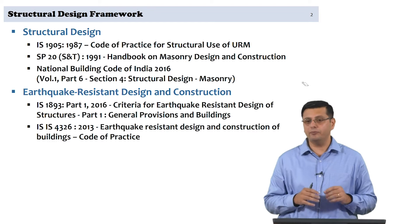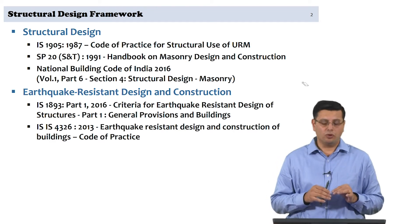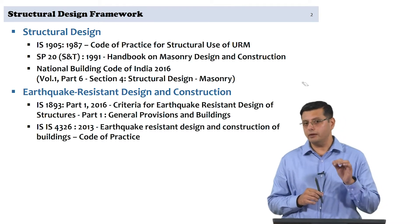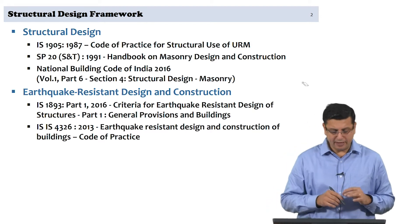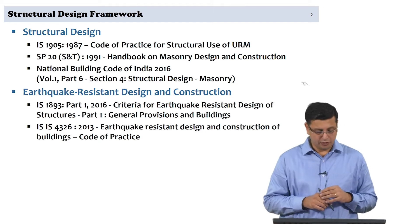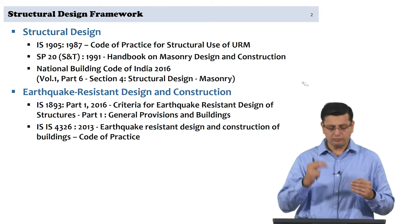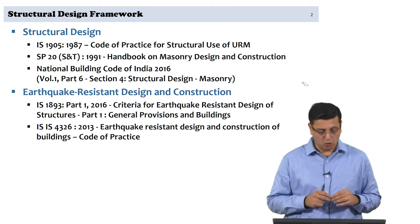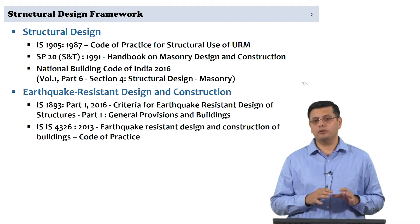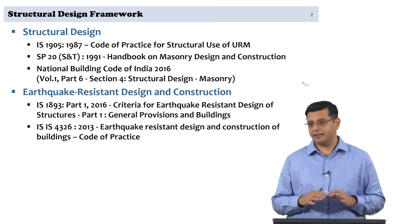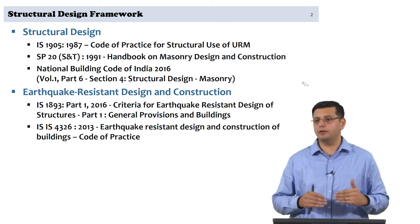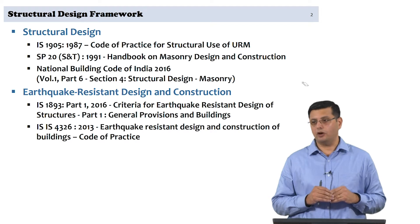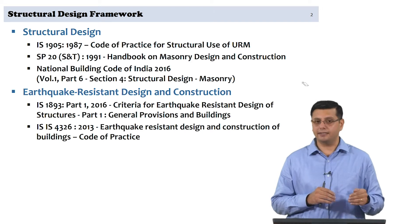Let us begin this module, but we really need to understand the structural design framework that exists for masonry structures. I repeat what I had started off with in module 1 on the different codes available for masonry structural design. I am making reference to particularly 4 codes. One other document referred to here is a handbook — an explanatory handbook for the design code itself. The first code we will be looking at is IS 1905, 1987.